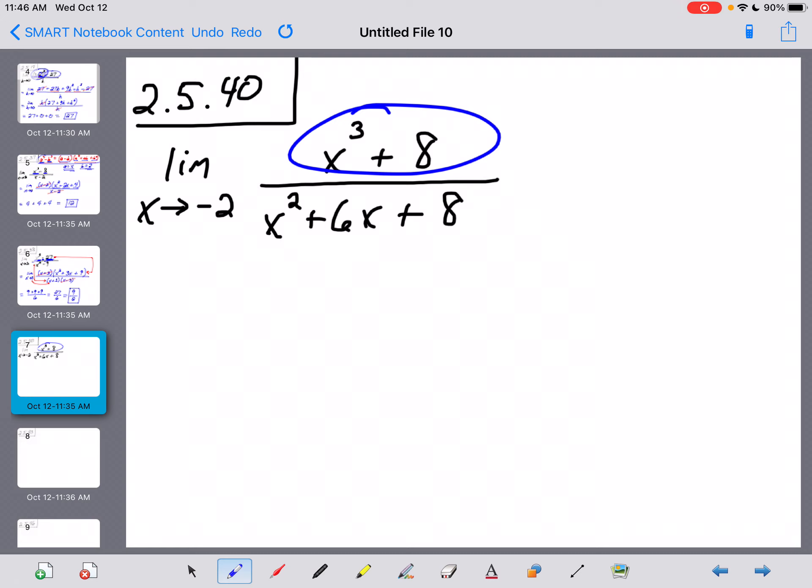So real quickly, let me just pretend for a moment that I didn't remember how to factor a sum of cubes in the numerator. Let me show you how you might be able to work your way around this. What happens if we try direct substitution?